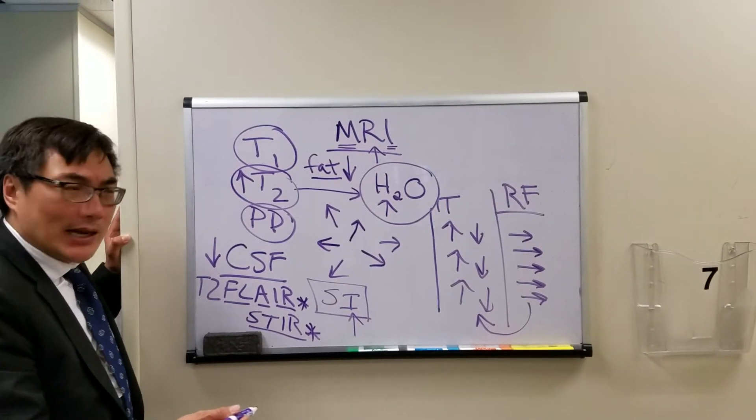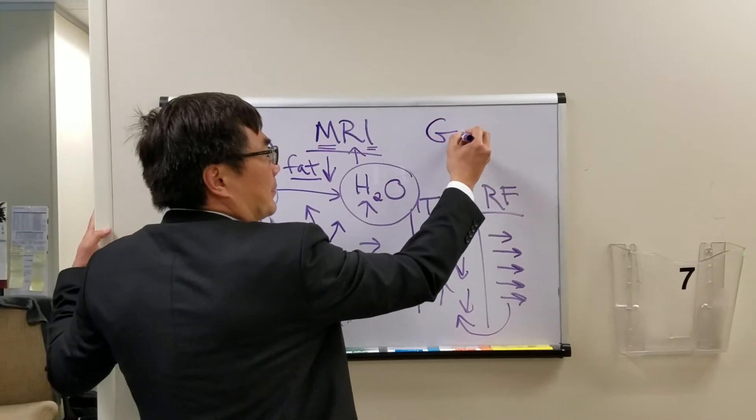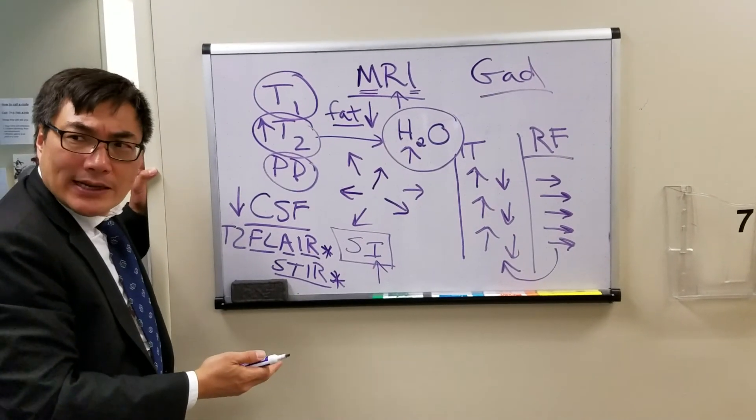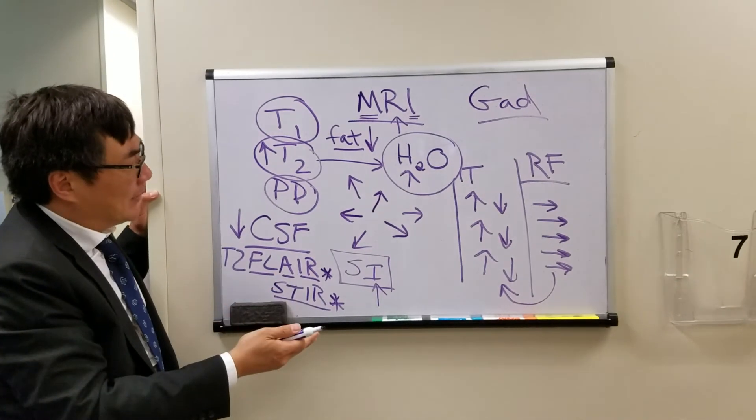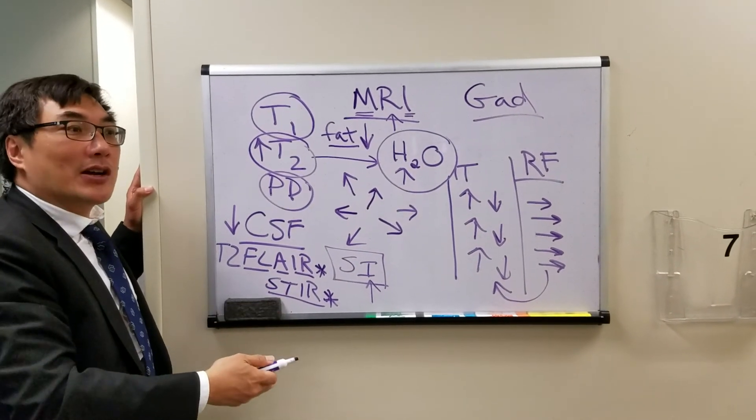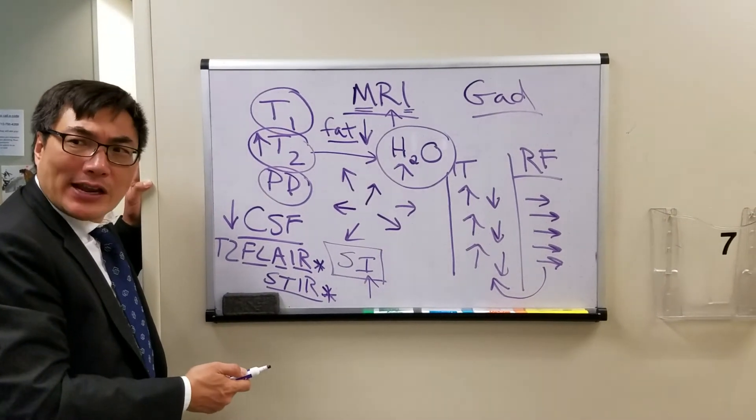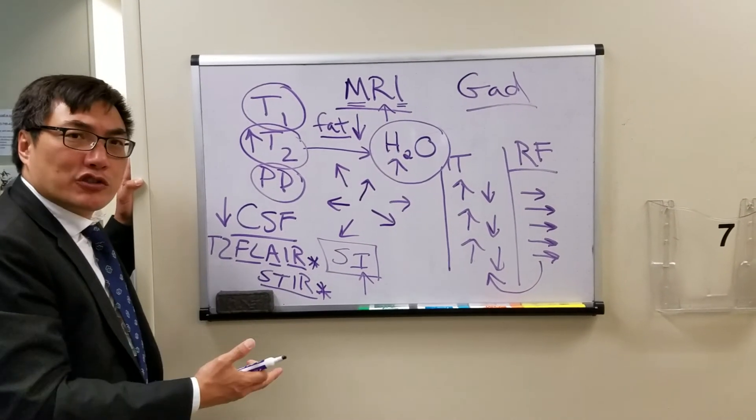In addition, we have to give the gadolinium contrast material. So gadolinium is a paramagnetic material that will enhance the local magnetic field. So when we give gadolinium, it will make things look more hyper-intense if there's breakdown or lack of the blood-brain barrier.